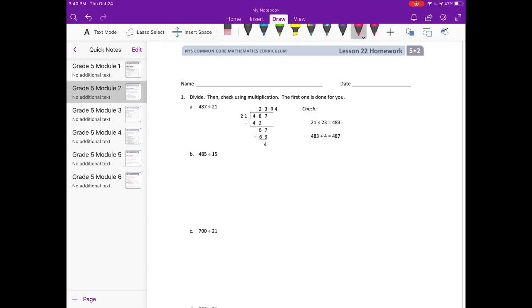Lesson 22 homework. Number 1, divide then check using multiplication. The first one is done for you. So let's skip to b, 485 divided by 15.